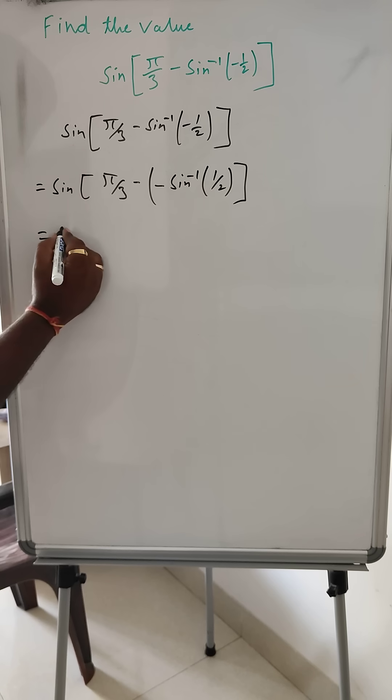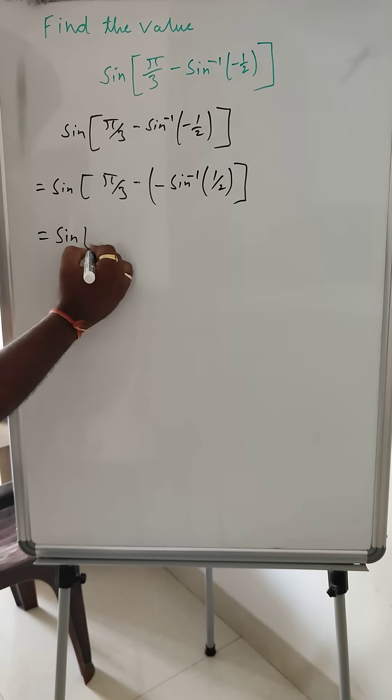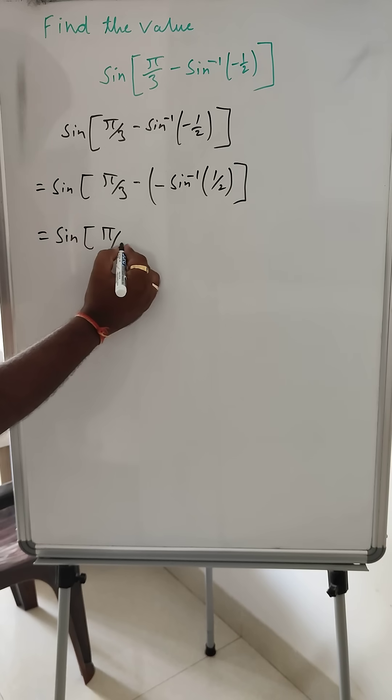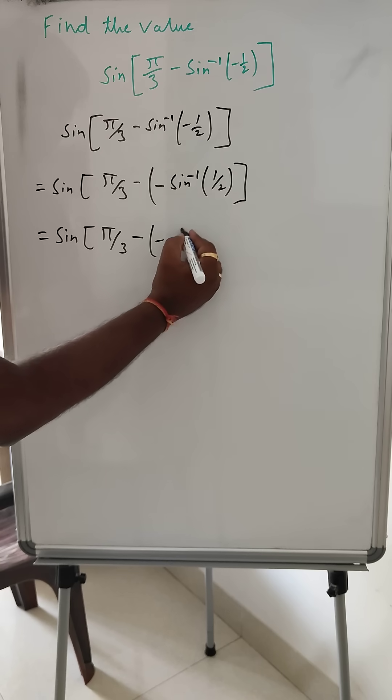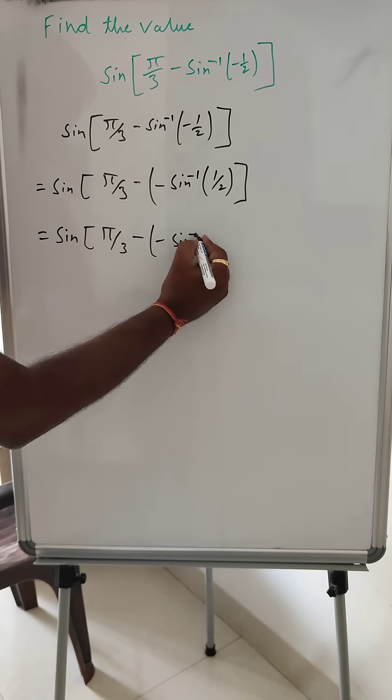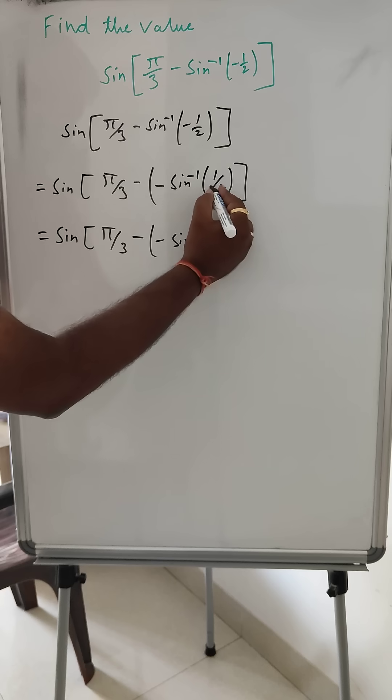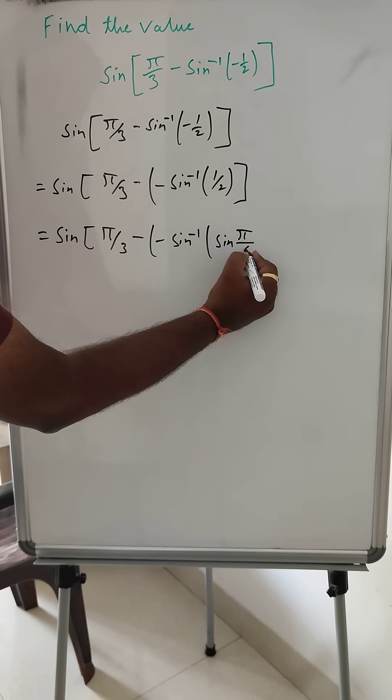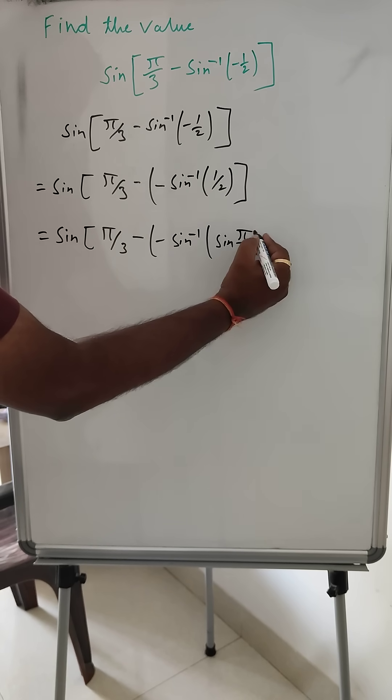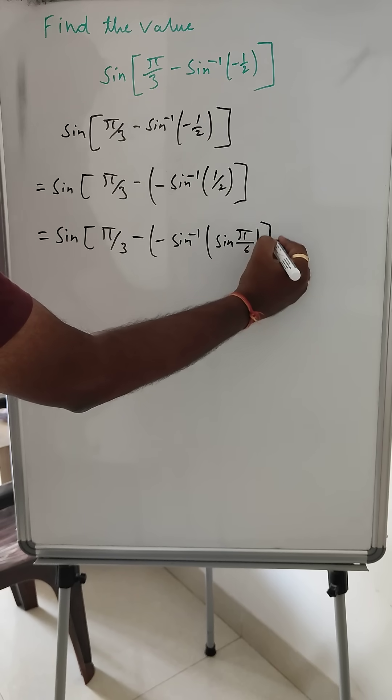So next step we can do sin(π/3) minus, this minus sin inverse. And this 1/2 we can write as sin(π/6). Sin 30 degrees is 1/2. So we can write this.